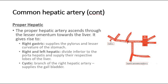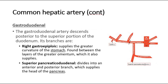The gastroduodenal artery descends posterior to the superior portion of the duodenum. Its branches are the right gastroepiploic, that supplies the greater curvature of the stomach and is found between the layers of the greater omentum, which it also supplies; and the superior pancreaticoduodenal artery, that divides into an anterior and posterior branch which supplies the head of the pancreas.